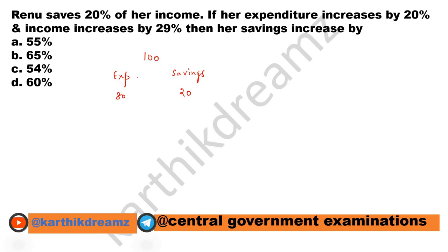Now the expenditure increases by 20%. Therefore, 120% of 80, which is the expenditure — this increases by 20%, so we multiply 120% of 80. That is 120 into 80 by 100, which is 96 rupees. And the income increases by 29%, therefore the income now gets increased to 129 rupees.